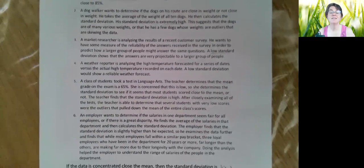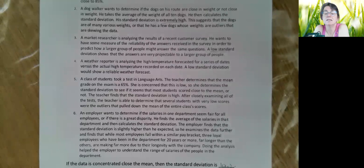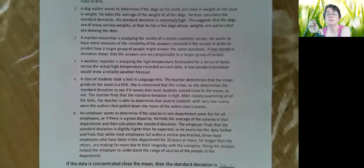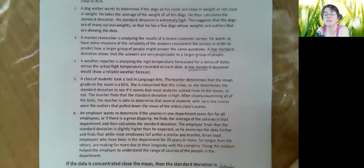Number four is my favorite one because it resonates with me—it makes the most sense. A weather reporter is analyzing the high temperatures forecasted for a series of dates versus the actual ones. He's looking at the difference between the two of them. A low standard deviation shows a reliable weather forecast. So if what he projects and what actually happens are really close, that's a high consistency—that's going to be a low standard deviation.